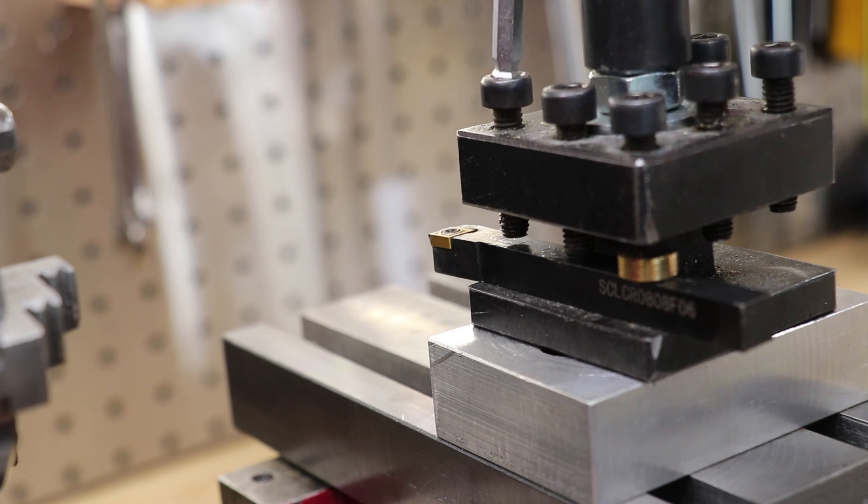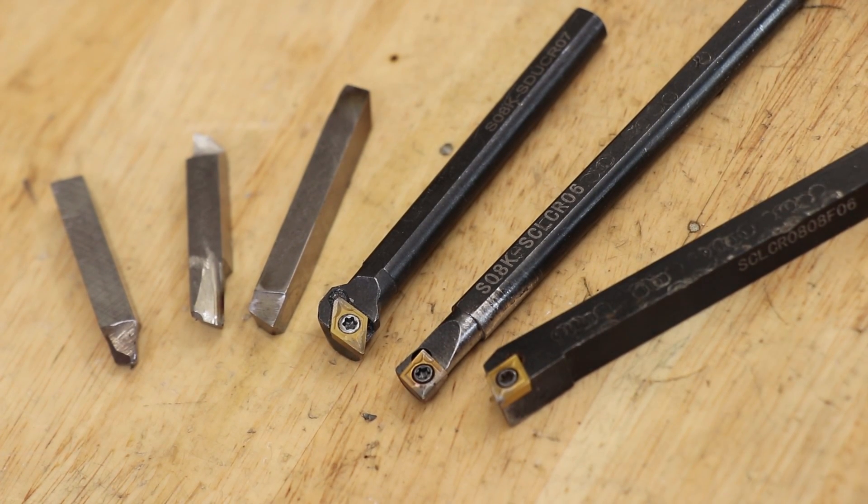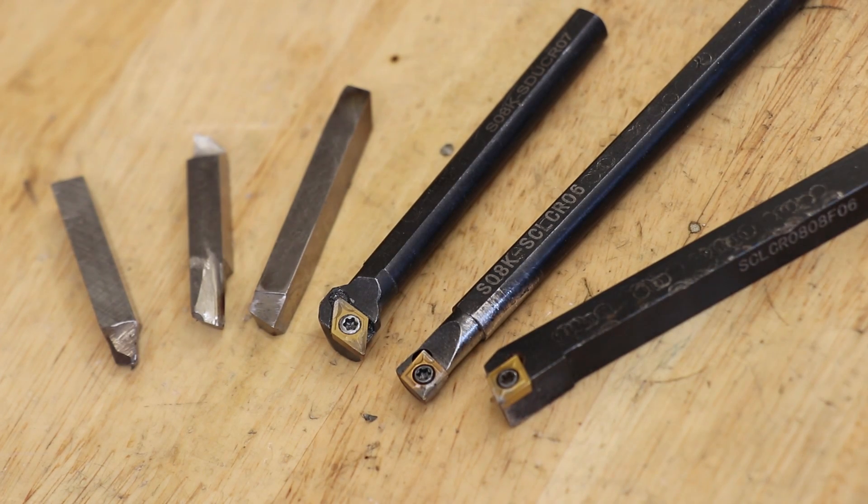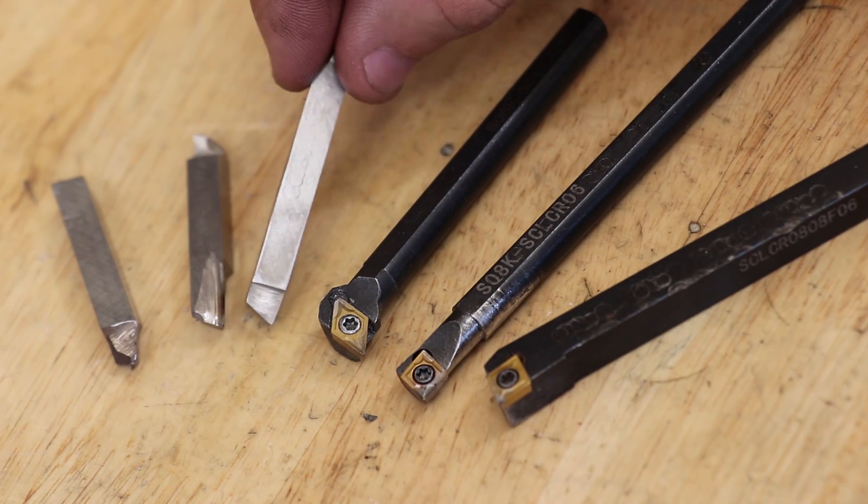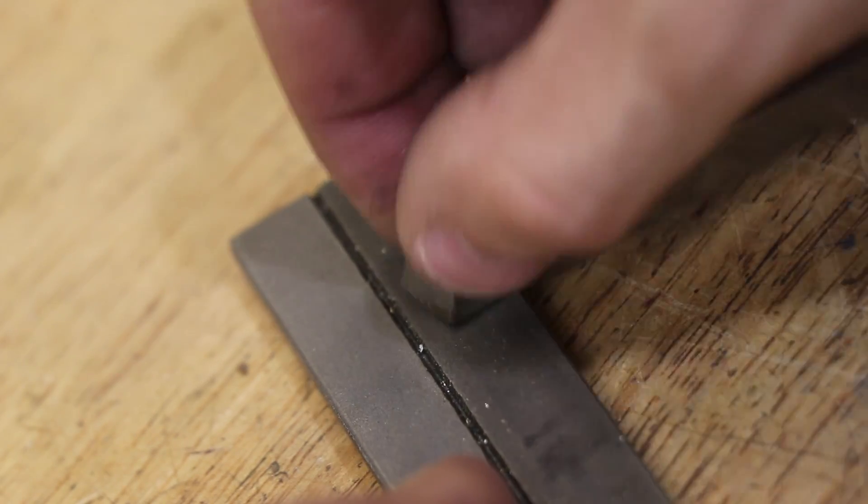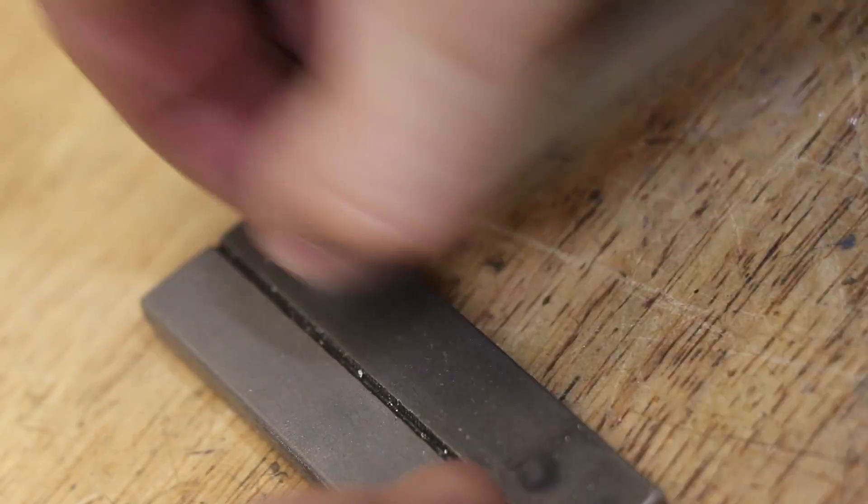Now, I do recommend getting a pre-ground set of high-speed steel lathe tools. They tend to be pretty decently well made for the money, and they cut really well on smaller lathes. They retail for about $40 for a set. If you buy these, I do recommend getting a hone or a whetstone to resharpen the cutting edge when they dull.